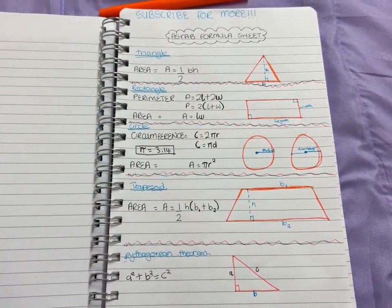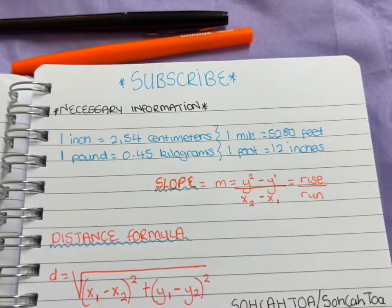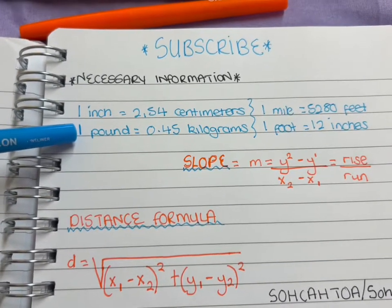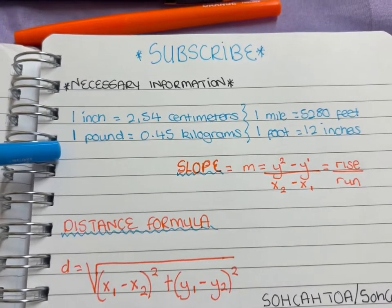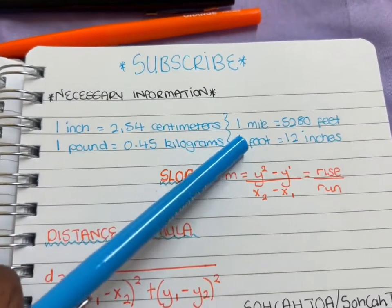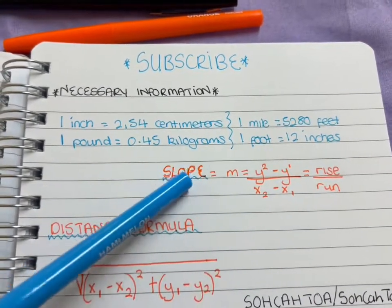Make sure you remember, you guys. I'm gonna do this so if you want to take a picture, screenshot or whatever. The next page is the same stuff—necessary information you gotta know. One inch is 2.54 centimeters, pound is 0.45 kilograms, one mile is 5,280 feet, one foot is 12 inches.